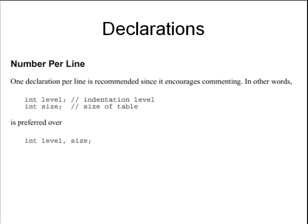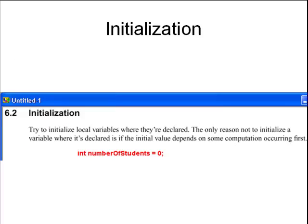When we declare our variables, yes, you can declare multiple variables per line, but that's not preferred. We're going to prefer a separate declaration for each variable, one per line. When we initialize our local variables, we're going to do it at the time of declaration. So here I declared the variable number of students of type int, and it's going to have an initial value of zero.